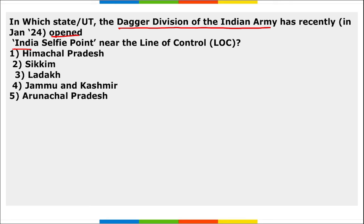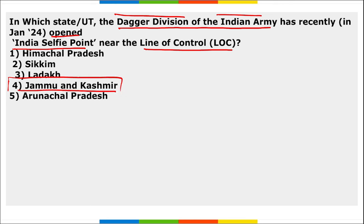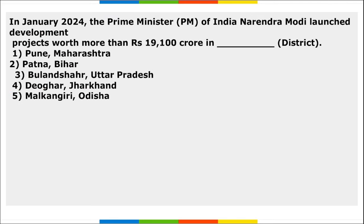The Dagger Division of the Indian Army recently opened an 'India Selfie Point' near the Line of Control in Jammu and Kashmir. It is located along NH 44, which is the longest national highway in India, connecting Srinagar in Jammu and Kashmir to Kanyakumari in Tamil Nadu.